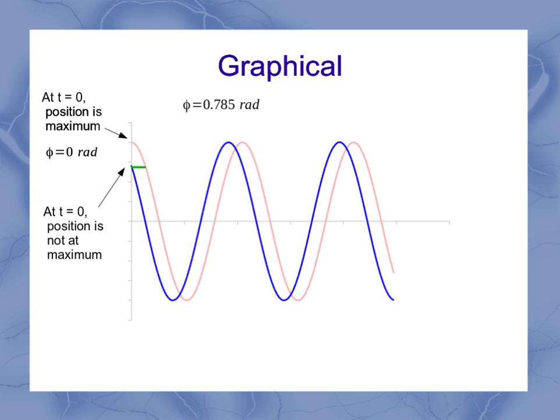So that difference between where I'm at at time equals 0 and where I would have gotten to that point is our phase shift. It's horizontal on the graph here. It's often measured up here at the top of the cycle or down here at the bottom of the cycle. But it's actually the same little shift no matter where you are on it.